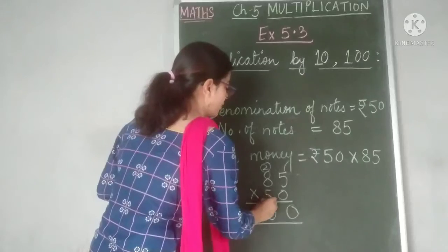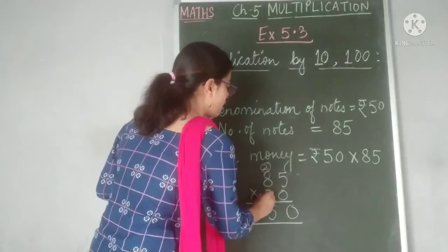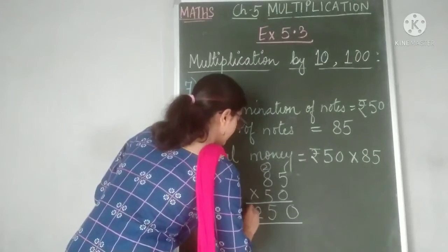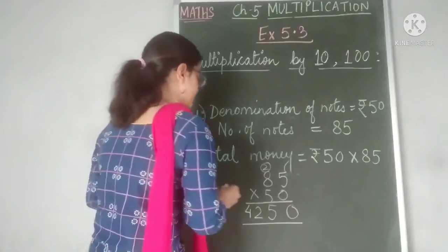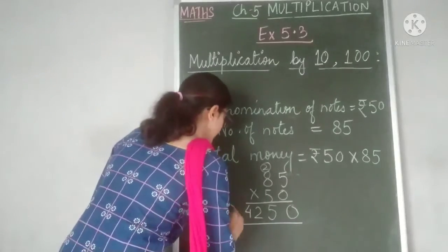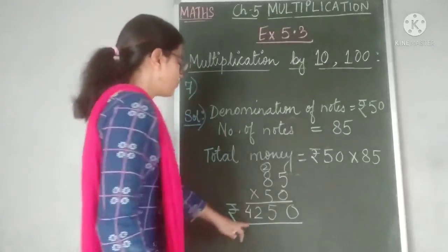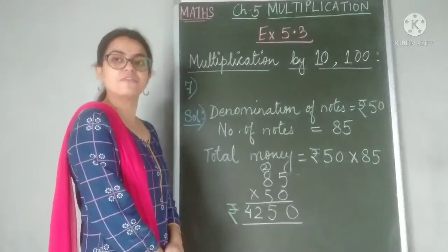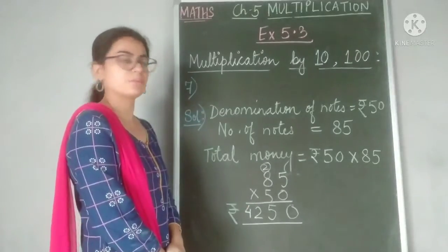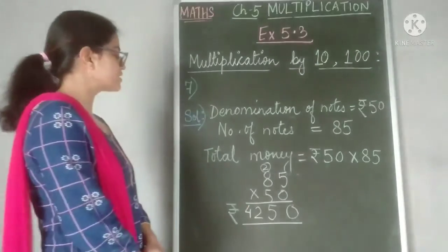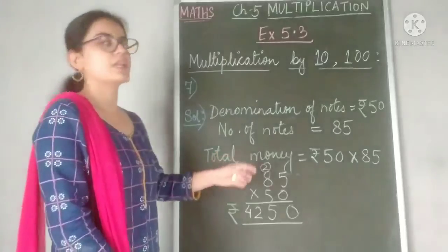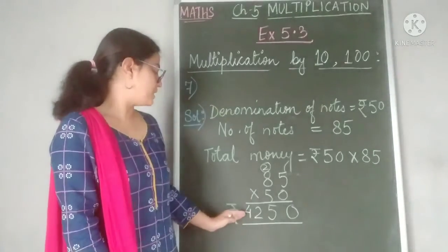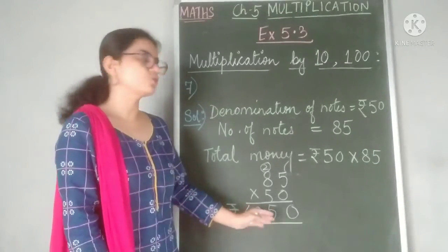2 is carried over. 5 eights are 40; 40 plus 2 is 42. So how much money does he have? He has rupees 4,250 with him. So the final statement will be: total money that Rajesh has is rupees 4,250.